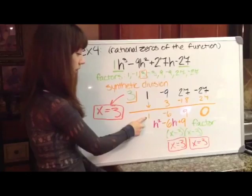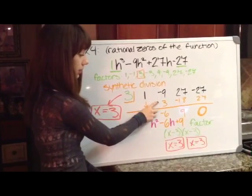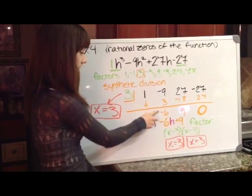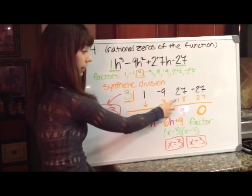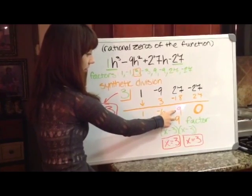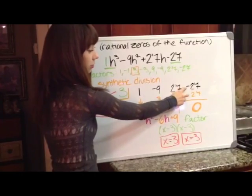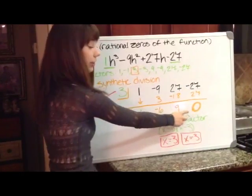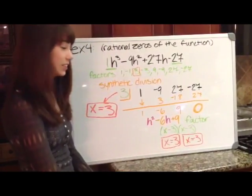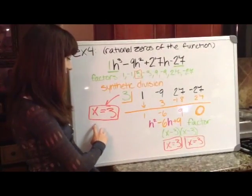My first number will always be brought down in synthetic division. So my 1 goes there. 1 times 3 is 3. So then negative 9 plus 3 will get you negative 6. Negative 6 multiplied by 3 will get you negative 18. 27 minus 18 is 9. 9 multiplied by 3 will get you 27. And negative 27 plus 27 will get you 0. That 0 is important because that tells you that this is a factor. So we know one of our factors is x equals 3.